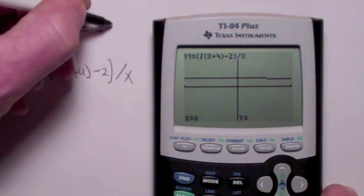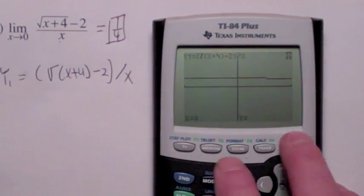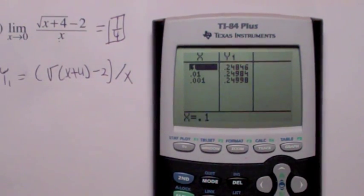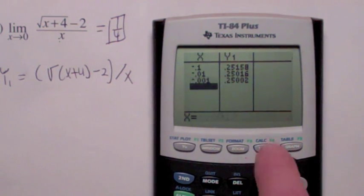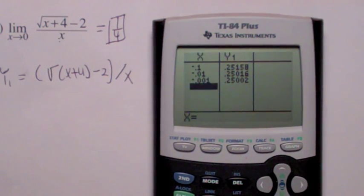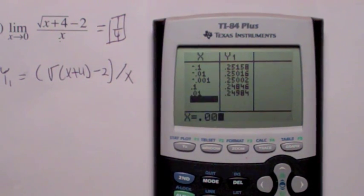And as you get close to zero from the right, it looks like the y values are also getting close to 0.25 or 1 fourth. This is why we say the limit is 1 fourth. Table feature? Nice, nice thing to use. As we get close to zero from the negative values from the left, like negative 0.1, negative 0.01, negative 0.001, you see the y values are getting close to 0.25. From the right, like 0.1, 0.01, 0.001, you see the y values are also getting close to 1 fourth.